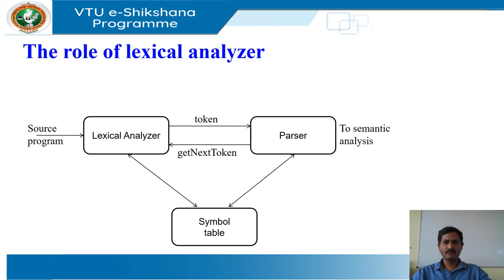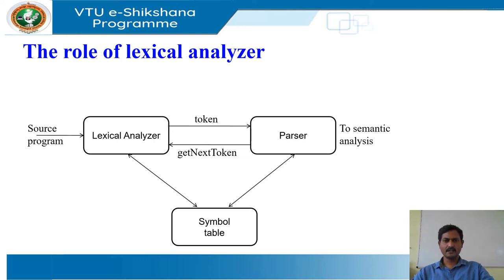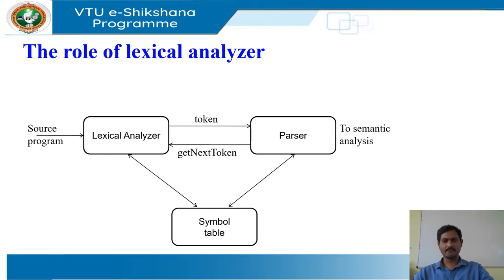It is common for the lexical analyzer to interact with the symbol table as well. When the lexical analyzer discovers a lexeme constituting an identifier, it needs to enter that lexeme into the symbol table. In some cases, information regarding the kind of identifier may be read from the symbol table by the lexical analyzer to assist it in determining the proper token it must pass to the parser.